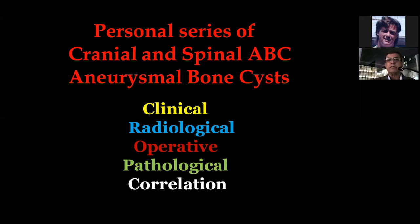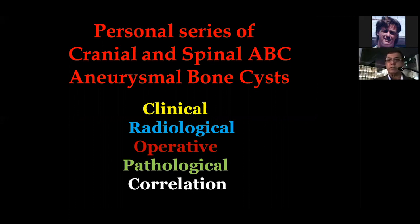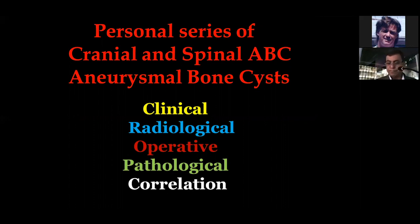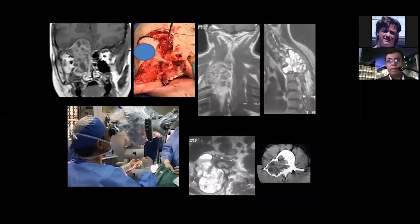I am presenting tonight my personal series on cranial and spinal ABC — the abbreviation of aneurysmal bone cysts — and we'll discuss that from the clinical, radiological, operative, and pathological correlation. These are some of the cases presented: cranial cases and cases in the spine.